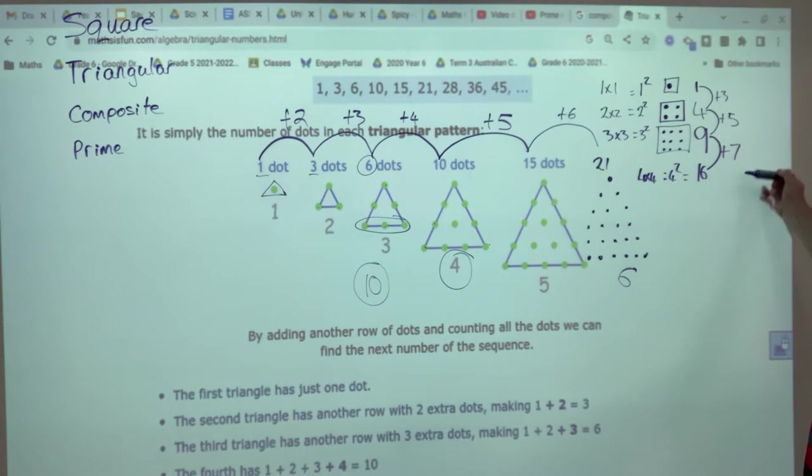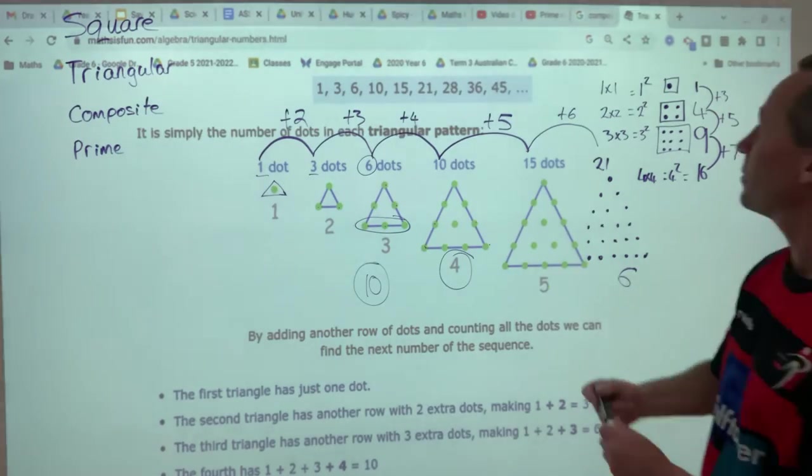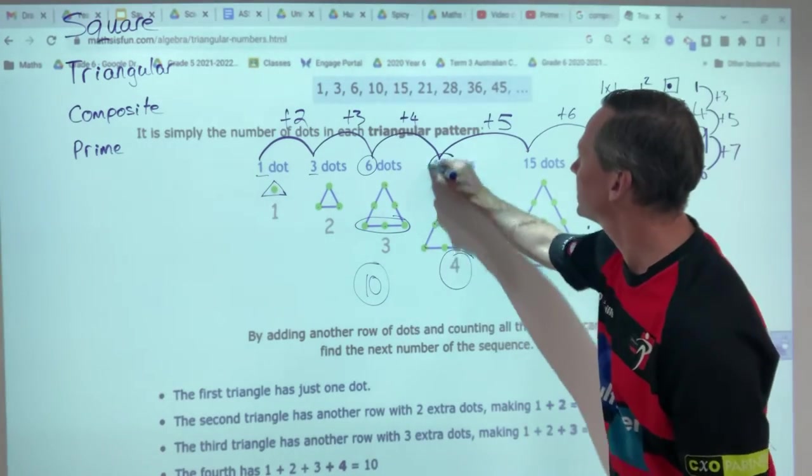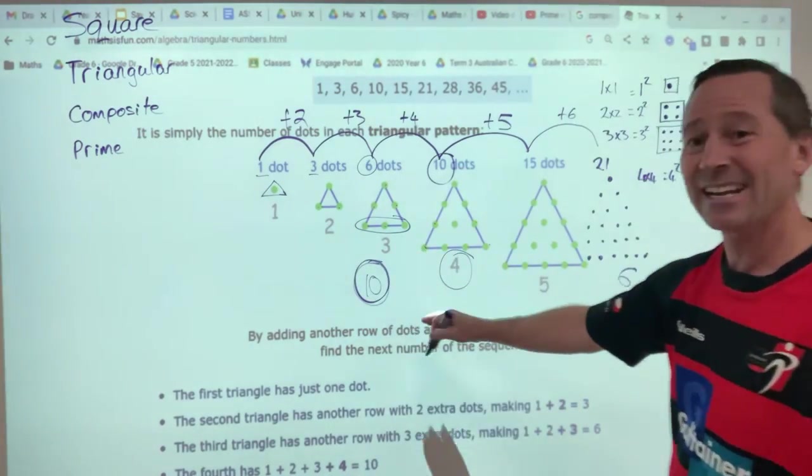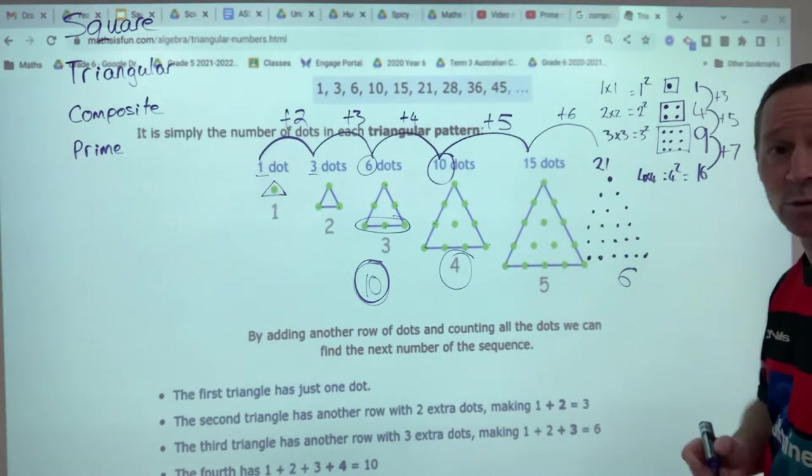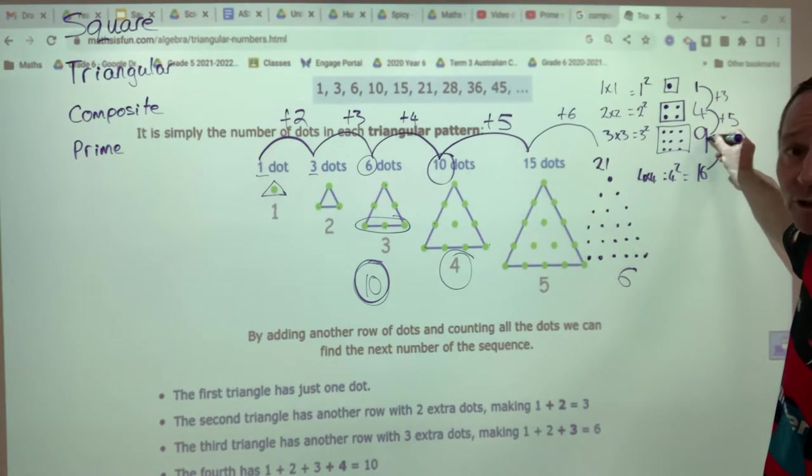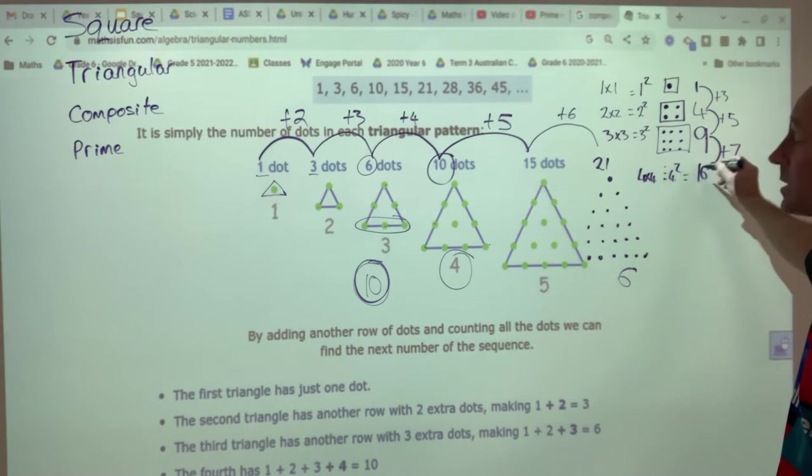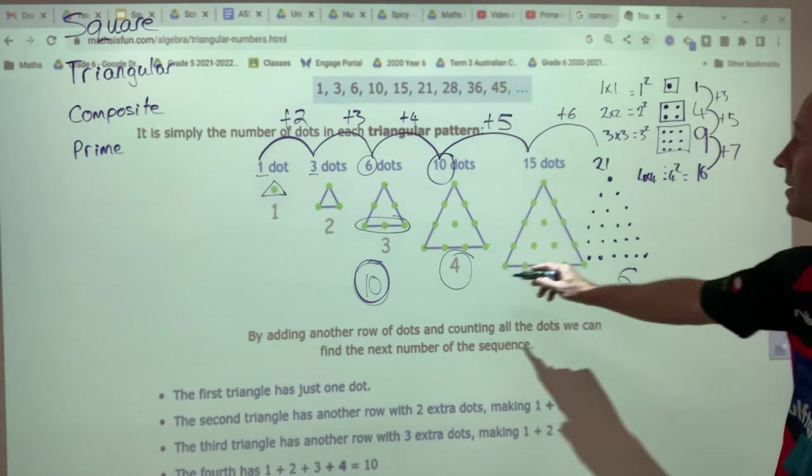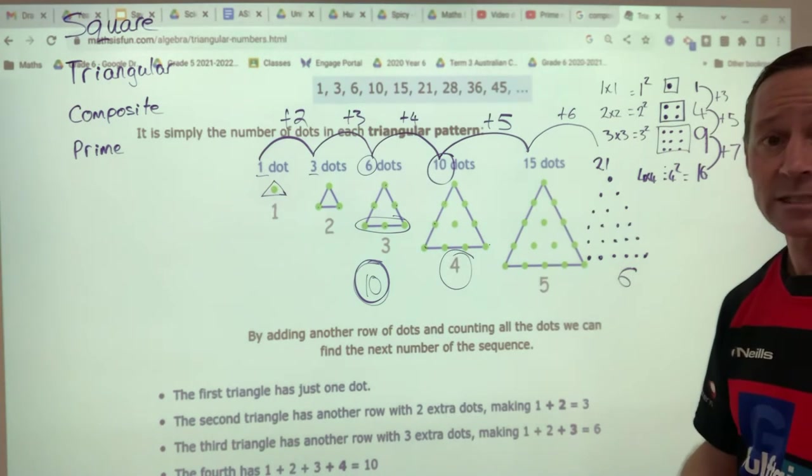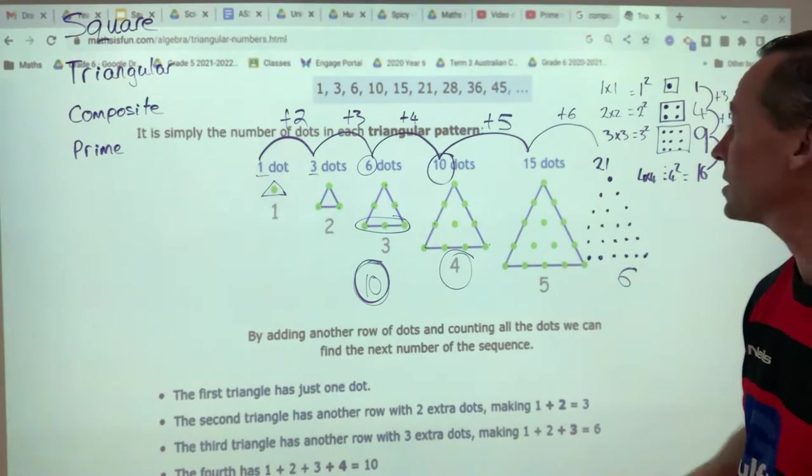So there's different ways to find out if a number is square or triangular. So here, if I was looking at 10, like I said, 10 is not a square number. Because three times three is nine. Four times four is 16. So 16 is a square number. Nine is a square number. 10 is not a square number. Something times itself does not equal that.